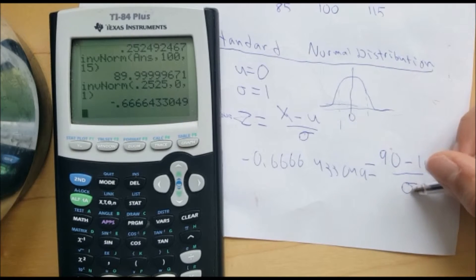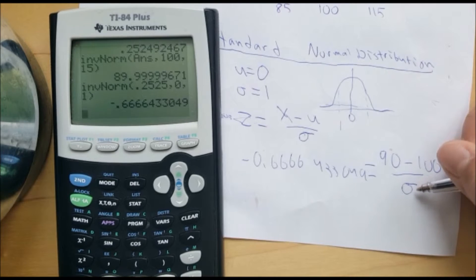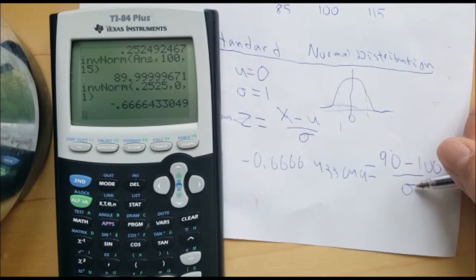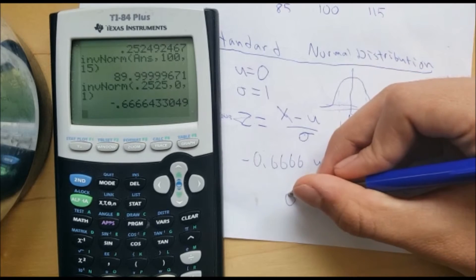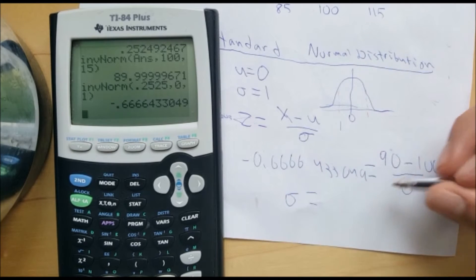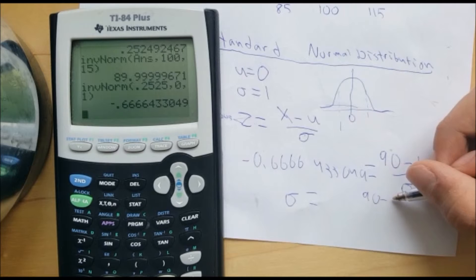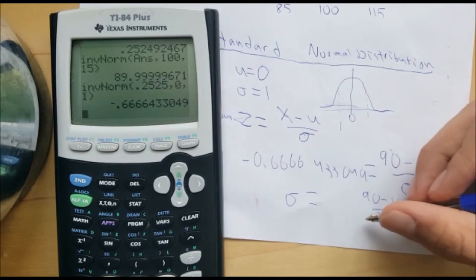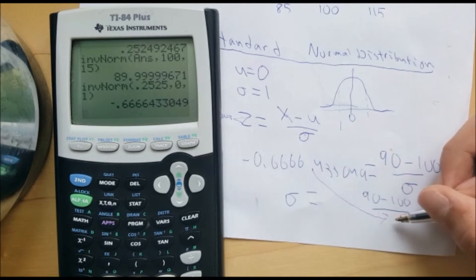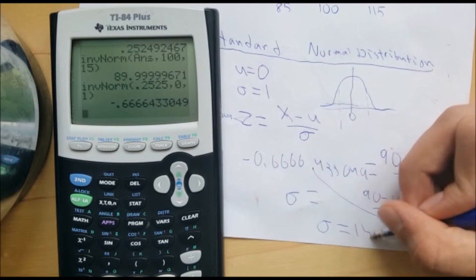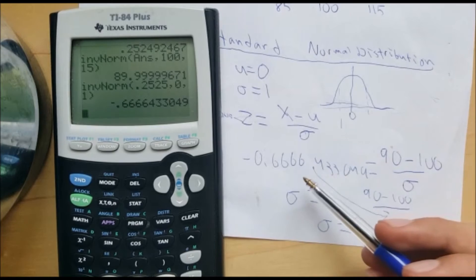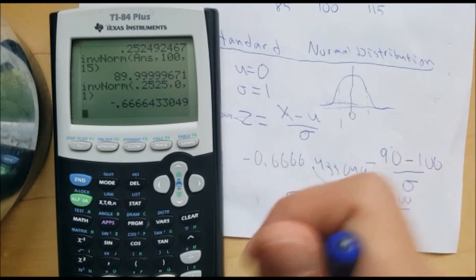We said we didn't know this one, it's actually 15, but we don't know it yet. So then you can use algebra to solve for standard deviation. 90 minus 100 over that thing, and that's actually going to give you 15. It's not going to give you exactly 15 because I didn't use the exact probability.